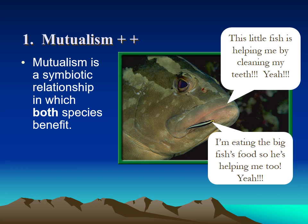The first type is mutualism. It's a symbiotic relationship in which both species get something good — that's why we put plus-plus. The way you remember that on the test is you see the letter T, which is a plus sign, in the word mutualism. So we have two of them — mutualism means both of them get something good.